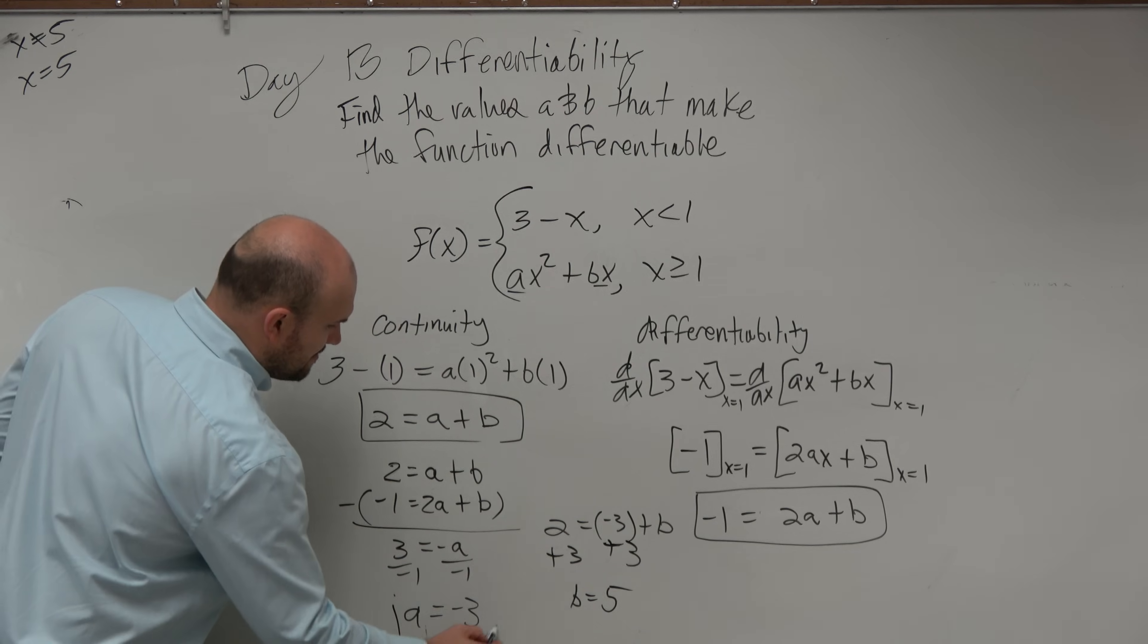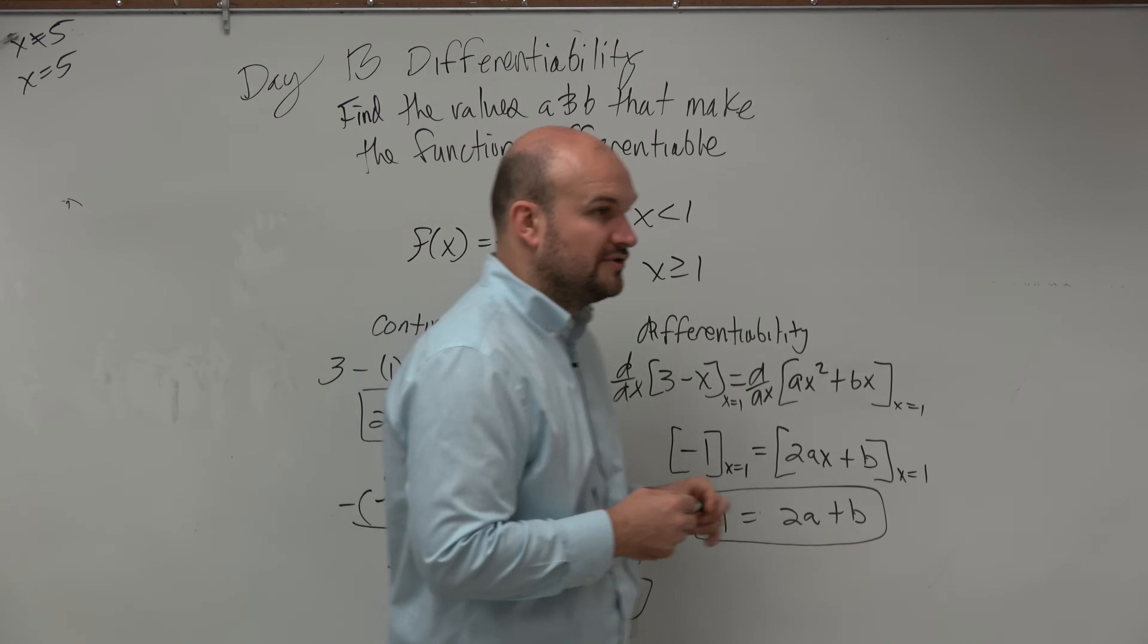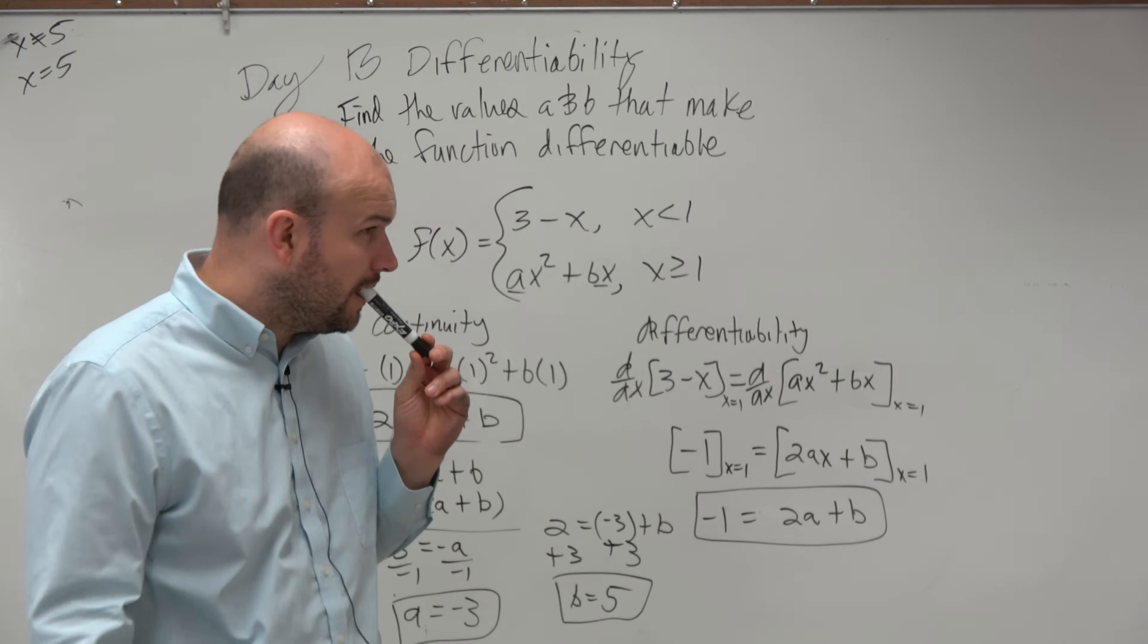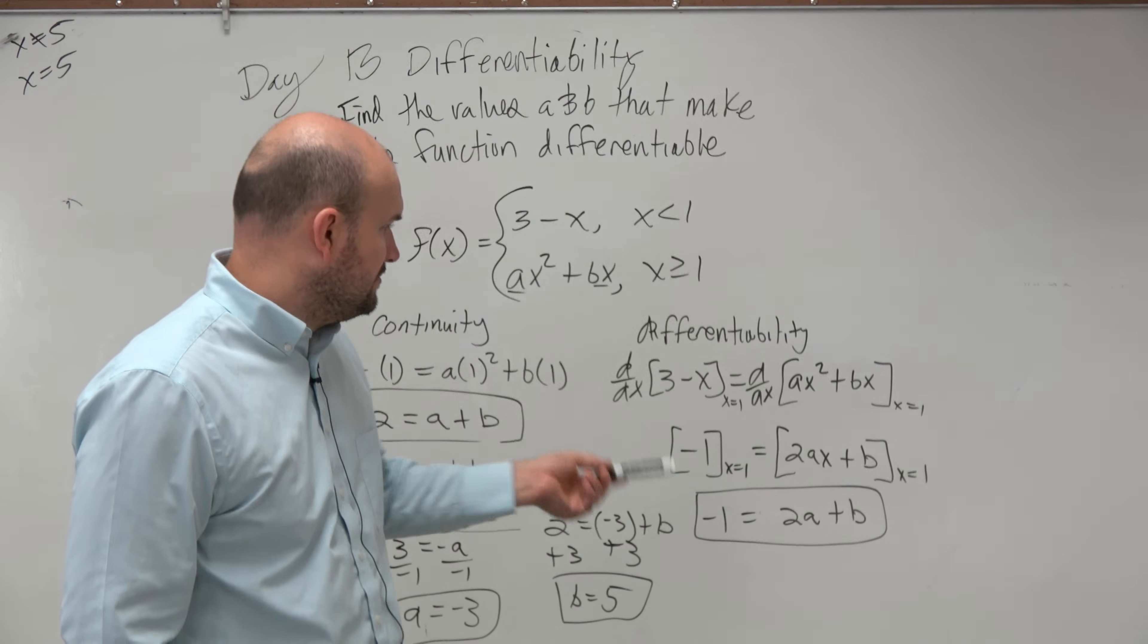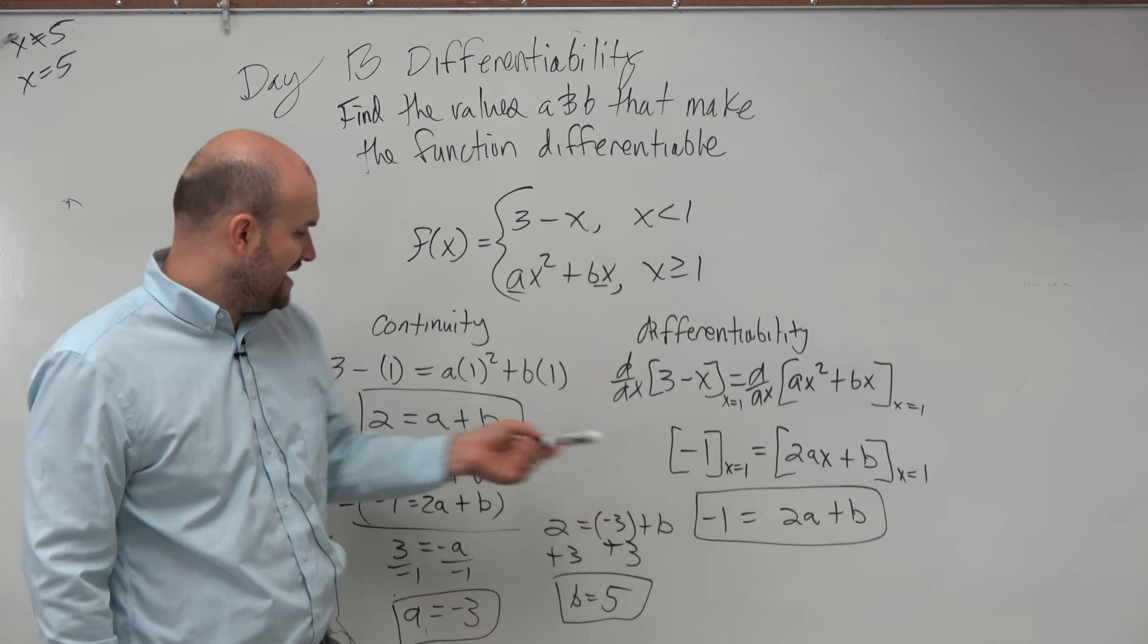So, the values that make the function differentiable are going to be negative 3 and 5. Yes? 2 equals 2. Huh? 2 for a. Okay. So, where did we differentiate from each other? Here? Do we have the same equations?